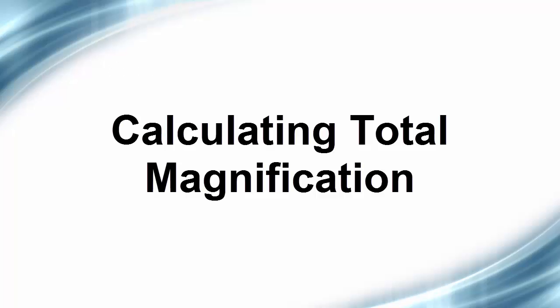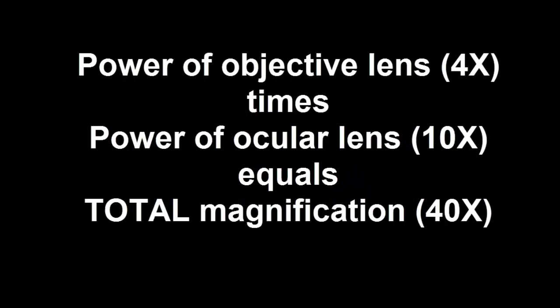You should always record the total magnification you are using to view your specimen. To calculate the total magnification for a specimen that you are viewing, multiply the power of the objective lens that you are using by the power of the ocular. In this case, the ocular lens is 10x, so when we are using the 4x objective, the total magnification will be 40 times.